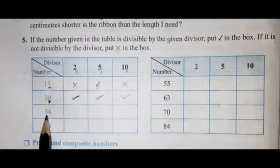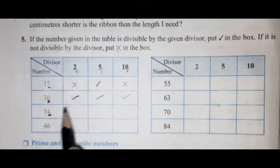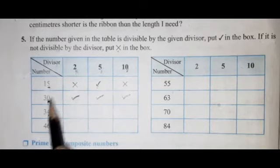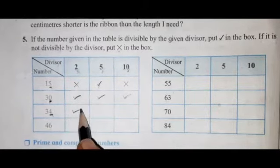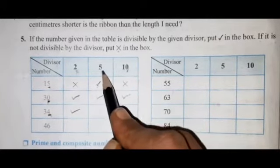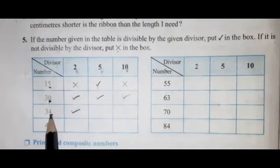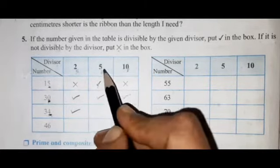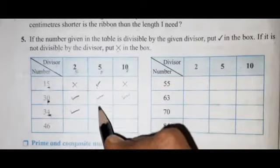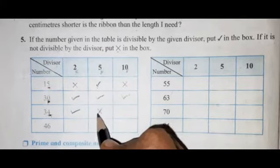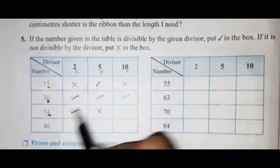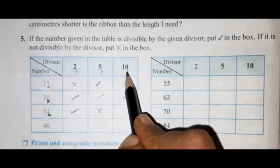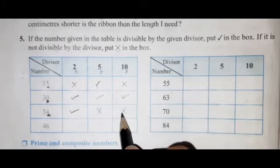Next number is 34. The unit place digit is 4, and if 4 is at the unit place, the number is divisible by 2 — so 34 is divisible by 2; put tick. Is 34 divisible by 5? No, because the unit place is 4, not 0 or 5 — put cross. Is 34 divisible by 10? No, because the unit place digit is 4 — put cross.